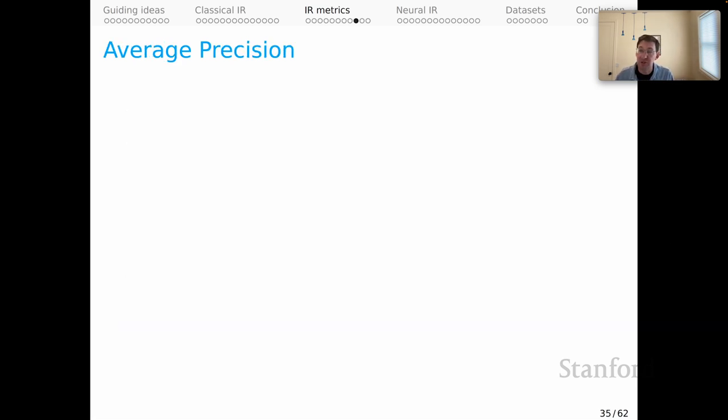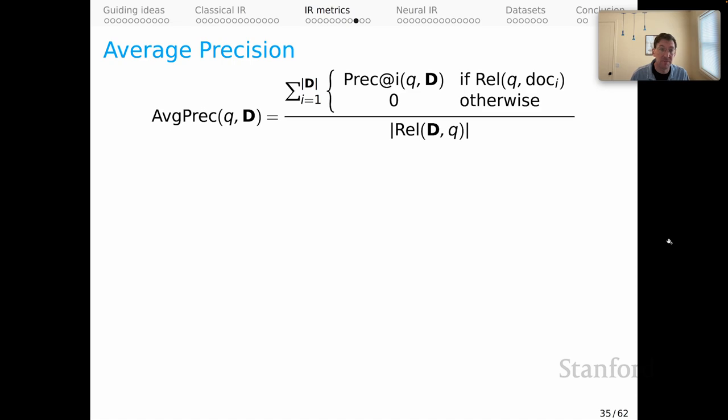Average precision is a nice alternative because it's less sensitive to the value of k, and we just saw how impactful that can be. Average precision for a query relative to a document ranking is kind of intuitively spelled out like this. For the numerator, we're going to get precision values for every step where there is a relevant document, every place where there is a star, and we sum those up. And then the denominator is the set of relevant documents.